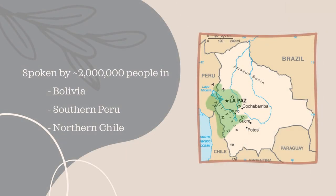Aymara is spoken by around 2 million people, namely the Aymara people. It is spoken in around a third of Bolivia, as well as parts of southern Peru and northern Chile.